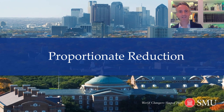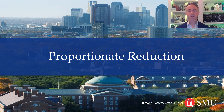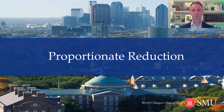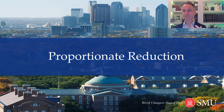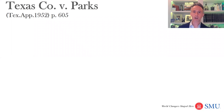Welcome to oil and gas. Today we're going to talk about proportionate reduction clauses. These are clauses designed to reduce the compensation to a lessor if the lessor owns less than they said they did in the entire property. For example, they said they had a one-half mineral interest and it turned out they only had a quarter mineral interest. To discuss this, we're going to look at the important Texas Co. versus Parks case, which is on page 605 in your book.